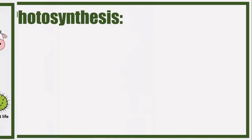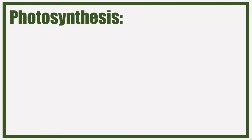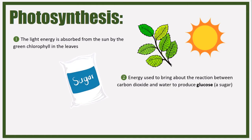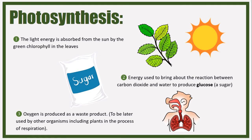Now, the steps of photosynthesis. First, light energy is absorbed from the Sun by the green chlorophyll in the leaves, which is found in the chloroplasts. Then that energy is used to bring about the reaction between carbon dioxide and water to produce glucose, which is a type of sugar. Oxygen is produced as a waste product - though it's actually useful since we use it for respiration.